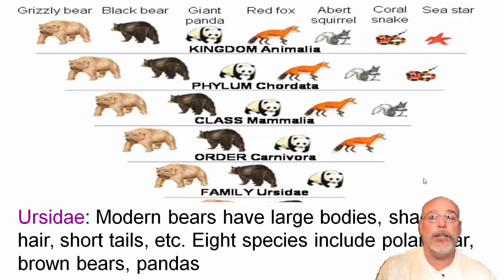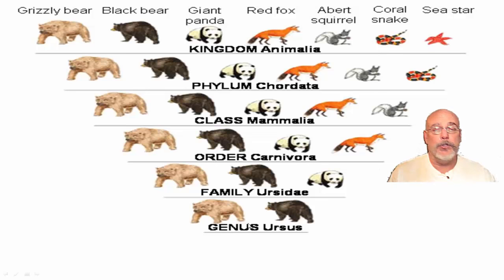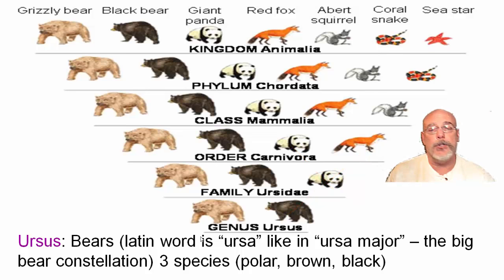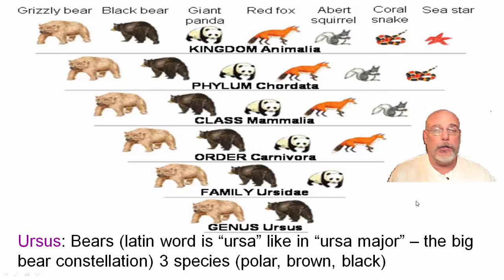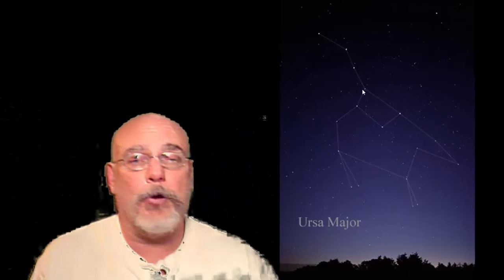The next grouping removes Mr. Fox — this is the family Ursidae, which includes the modern bears. They have large bodies, shaggy hair, and short tails. Eight species are included: polar bears, pandas, brown bears, and others. Then we go down to the genus Ursus. Ursus comes from the Latin word 'ursa,' like the constellation Ursa Major — the big bear constellation. The species in genus Ursus include the polar bear, brown bear, and black bear.